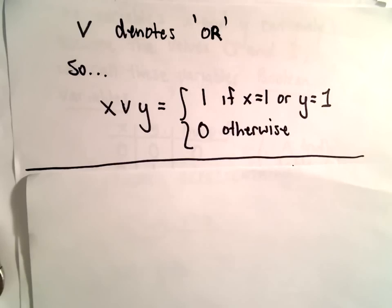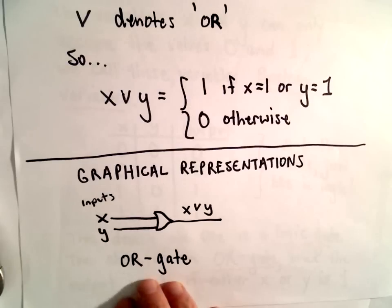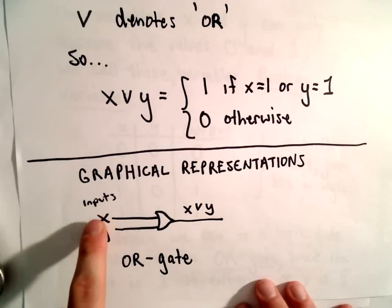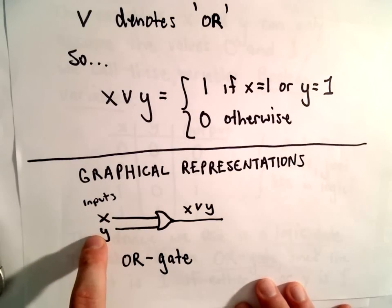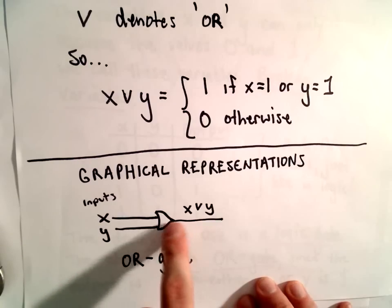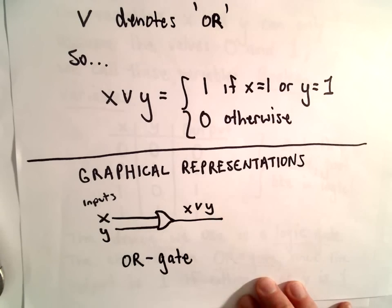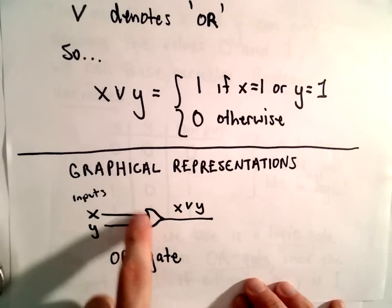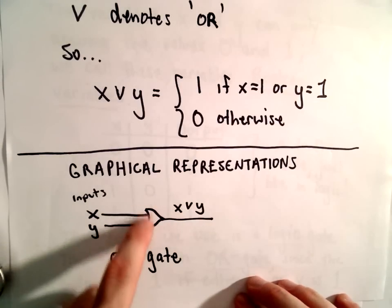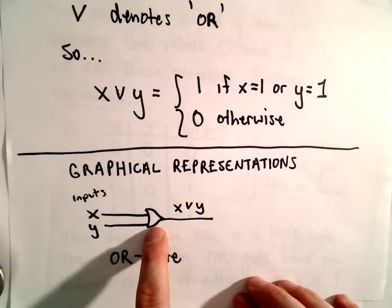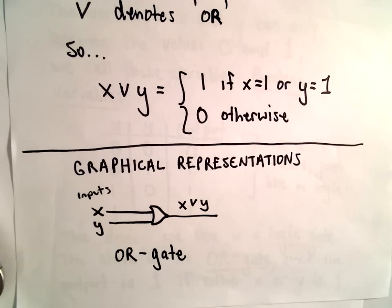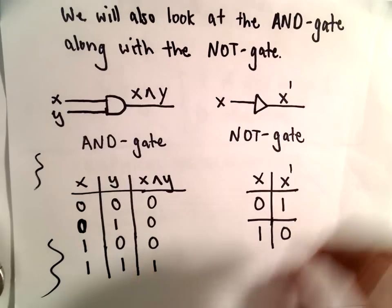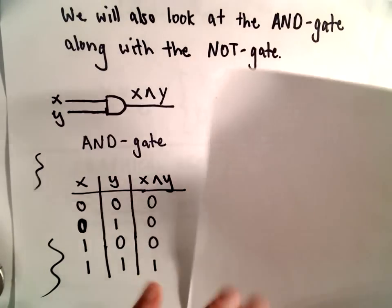Now we'll talk about graphically representing these circuits. Down here we have the OR gate — the inputs are x and y, and the output is the expression x OR y. This is the graphical representation of an OR gate. There are different notations; this is a common one. The OR gate looks a little like a wedge, and all the gates look relatively similar, so we'll be extra careful distinguishing them.